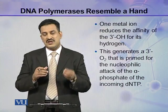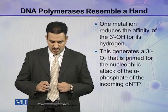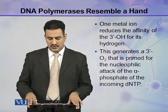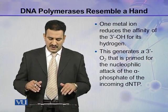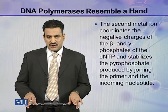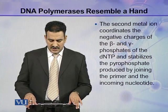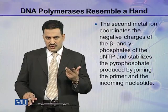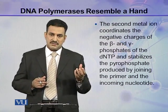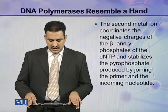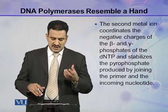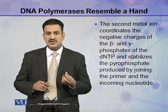This three-prime end has to attack on the alpha phosphate of the incoming nucleotide. This generates a 3-prime oxygen that is primed for the nucleophilic attack of the alpha phosphate of the incoming dNTP. The second metal ion coordinates with the negative charges of the beta and gamma phosphates of the dNTPs. When these two phosphates or pyrophosphate are released, this metal ion coordinates with the negative charges present on this pyrophosphate and stabilizes the pyrophosphate produced by joining the primer and the incoming nucleotide.